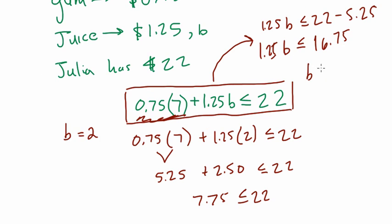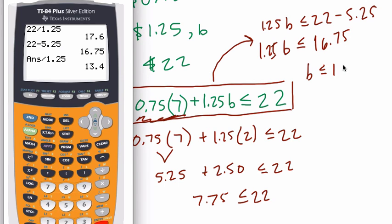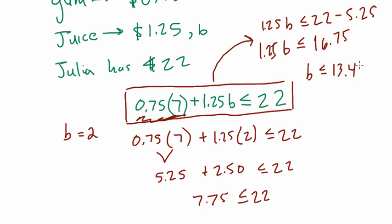That's 13.4. She can buy less, right, B has to be less than or equal to 13.4. So, in other words, the most amount of bottles she can buy of juice is 13.